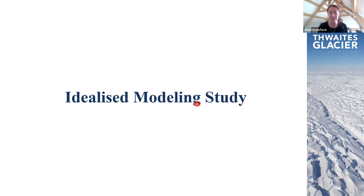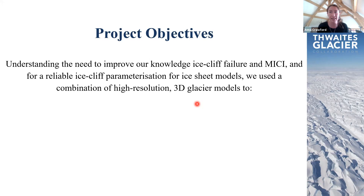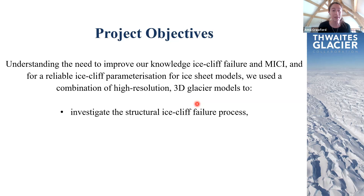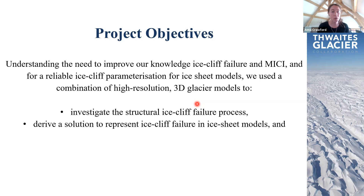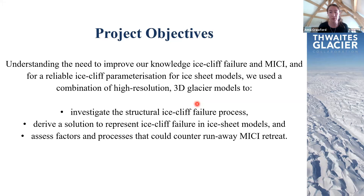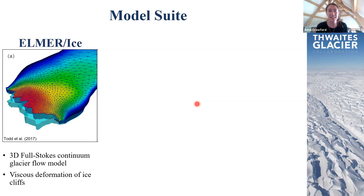Given the need to improve understanding of ice cliff failure and develop a reliable parameterization for ice sheet models, our project used a suite of high-resolution 3D glacier models with three aims: first, investigate the basic process of ice cliff failure; second, derive a solution to represent ice cliff failure in ice sheet models; and third, identify what factors and processes could counter runaway marine ice cliff instability retreat. We used three models individually and in coupled workflows.